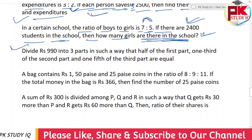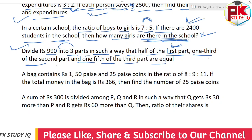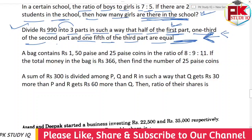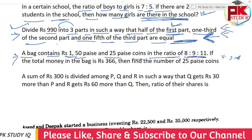Divide 990 into 3 parts in such a way that half of the first part, one-third of the second part, and one-fifth of the third part are equal to one another. This ratio is 8:9:11, and this ratio is 25 and 25, and this ratio is 8:11.